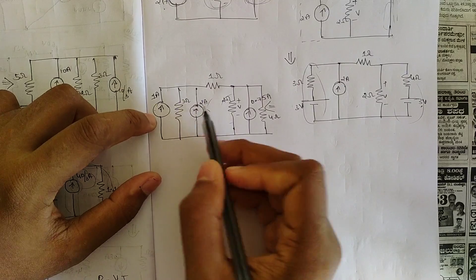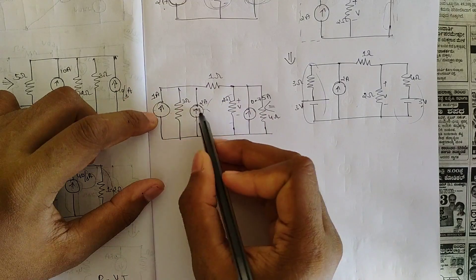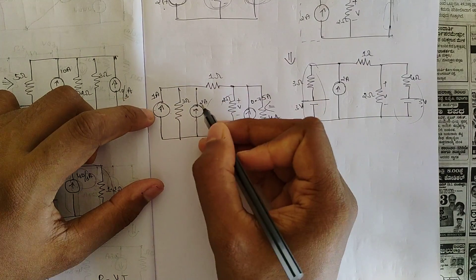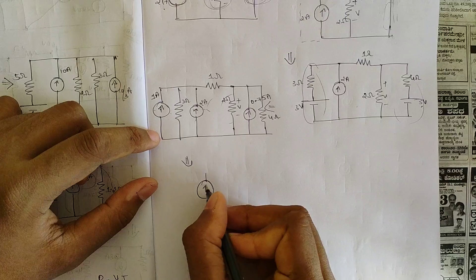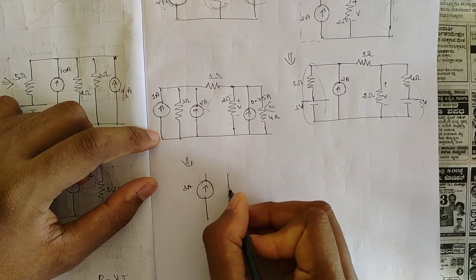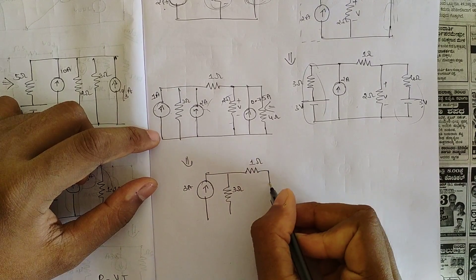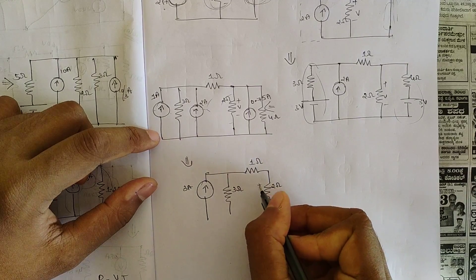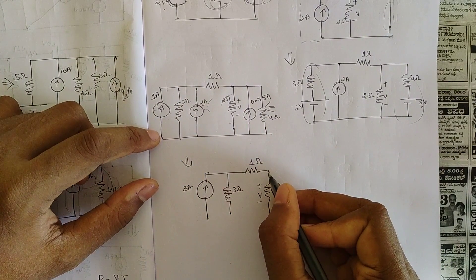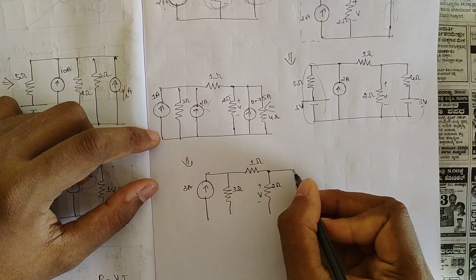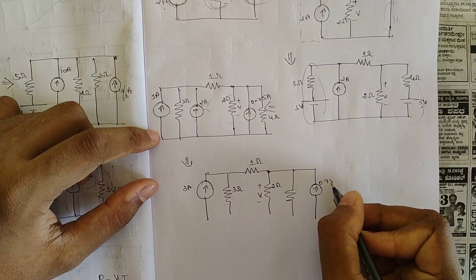Now add these two current sources. After adding, 1 plus 2 is 3 amps. Along with the resistance: this is 1 ohm, 2 ohm, this is 2 ohm, this is 2 ohm, 4 ohm, and 0.75 ampere.